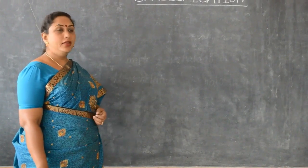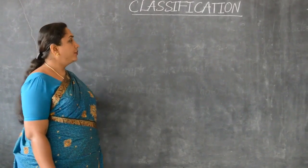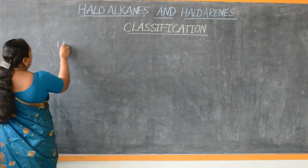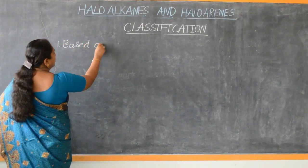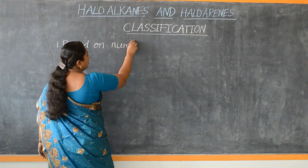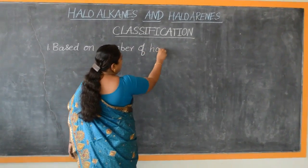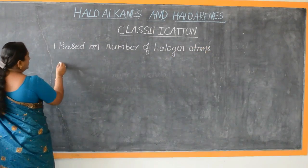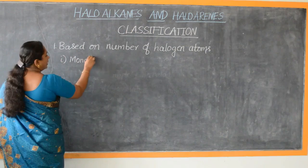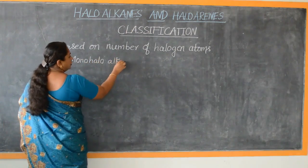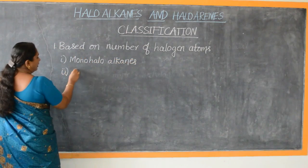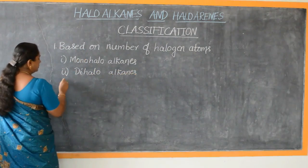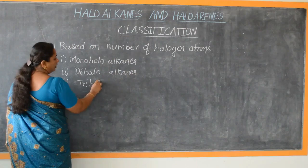In this video lesson, let us understand the classification of haloalkanes. Haloalkanes are classified on different bases. Mainly, depending on the number of halogen atoms present in the organic compound, haloalkanes are classified as mono-haloalkanes, di-haloalkanes, and tri-haloalkanes.